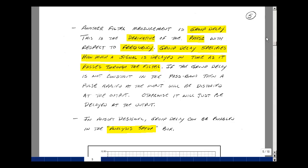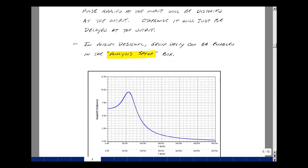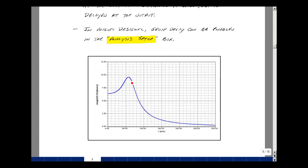I'm plotting this in Ansoft Designer, and you can get the group delay under the analysis setup box. We're not seeing a constant group delay, so a pulse passing through our filter would not just be simply delayed, but also delayed and distorted. Not critical for what we're doing, but I thought I'd show you another filter parameter that we talk about in filter theory.